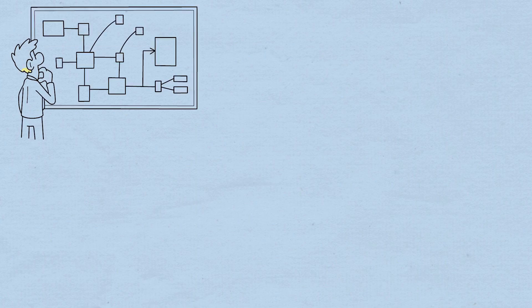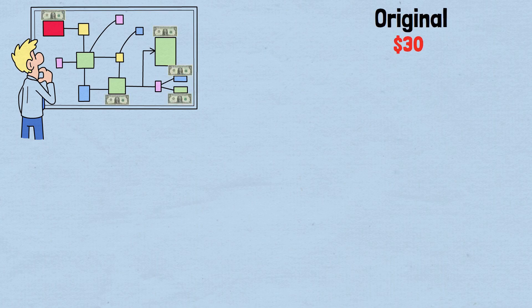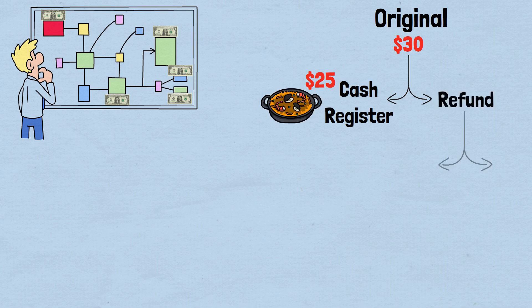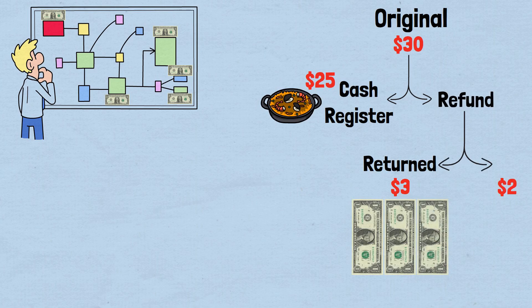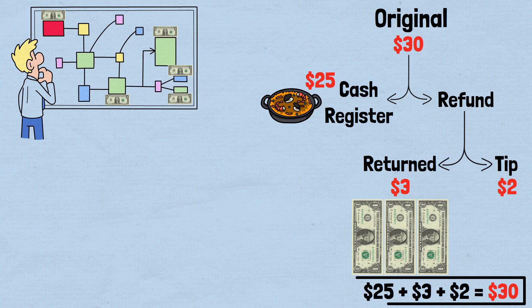To resolve this paradox, we need to trace through the money flow with mathematical precision, keeping track of every dollar and where it ends up. Starting with the original $30: $25 is still in the restaurant's cash register — the actual cost of the meal. $3 has been returned to you and your friends, $1 each. $2 is in the busboy's pocket — his tip. Verification: $25 plus $3 plus $2 equals $30. Every dollar is accounted for.